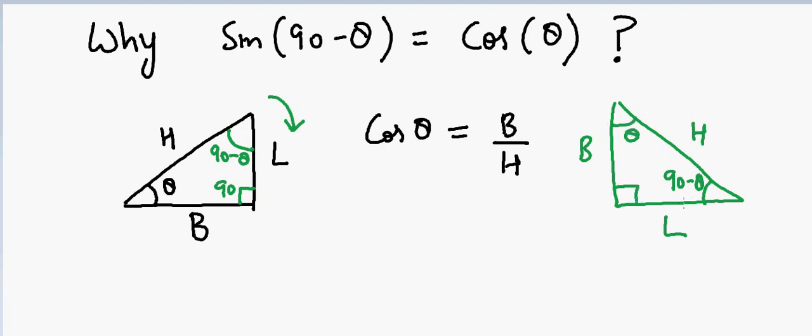So now what if I define sine of 90 minus theta? So I know that for this angle, sine of 90 minus theta should be equal to length, which is now base, divided by hypotenuse, which is H.